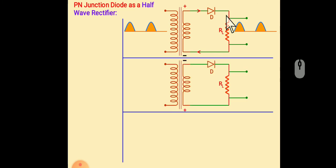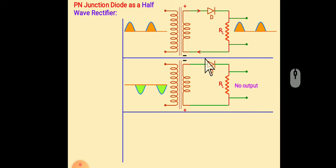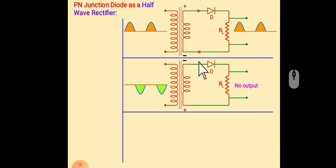Similarly, for the negative half cycle, this terminal becomes negative, so negative terminal is connected to P type.